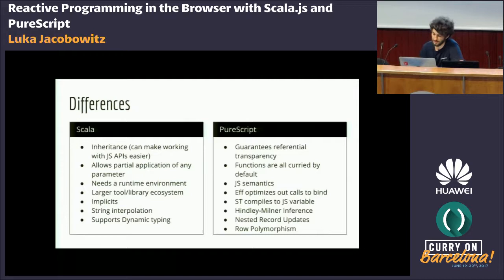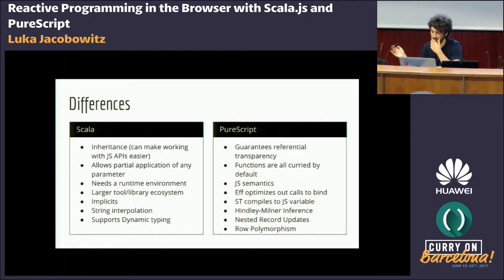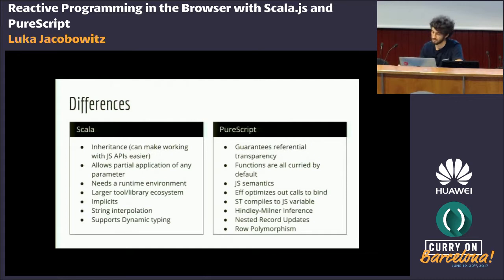In Scala you can partially apply a function by any parameter. In contrast, in PureScript all functions are curried by default, meaning PureScript doesn't actually have partial application because all functions are already unary. If you have a function that takes three or four parameters — or the equivalent in PureScript where you have a function returning a function returning a function — you can partially apply the first parameter. In PureScript and Haskell you usually only partially apply the last parameter, so it's a trade-off.